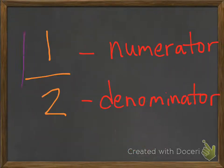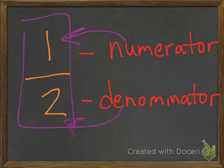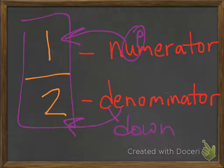Here's one fraction — this is one half. The number on top is the numerator, and the number on the bottom is the denominator. One way to remember this: the numerator is on top — up — and the denominator is on the bottom — down. So it looks like one over two, but the correct way of reading this is one half. Numerator on top, denominator on bottom.